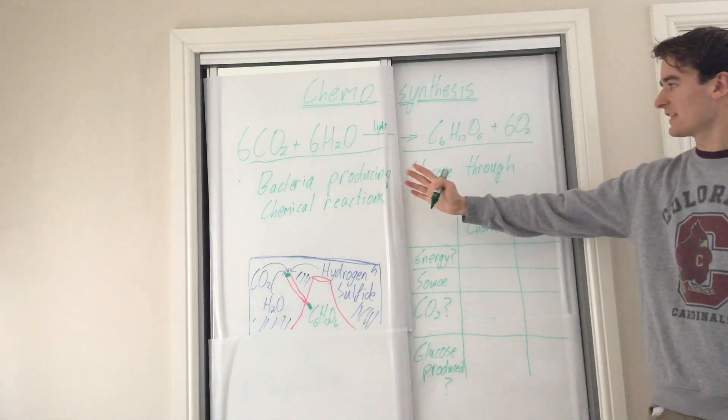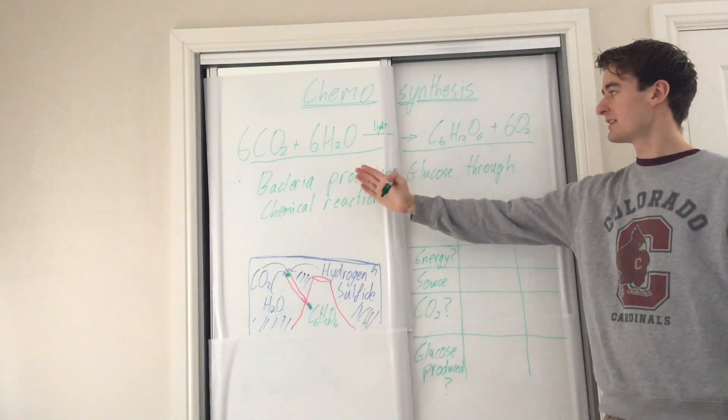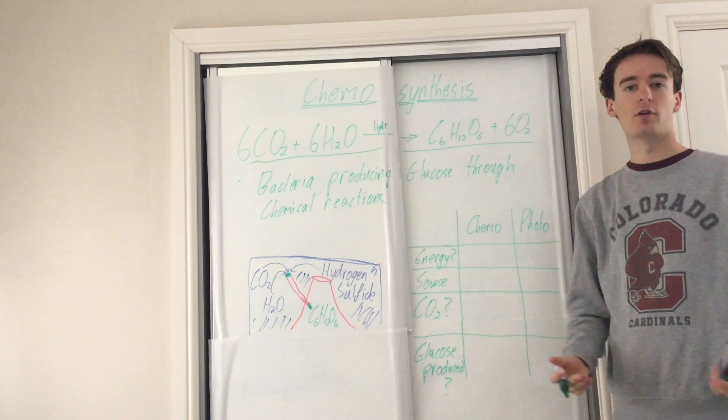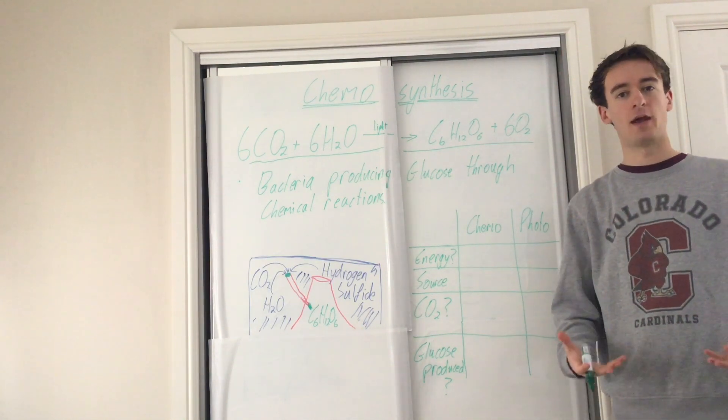So that's it. Chemosynthesis is where bacteria produce glucose through chemical reactions to give plants some energy.